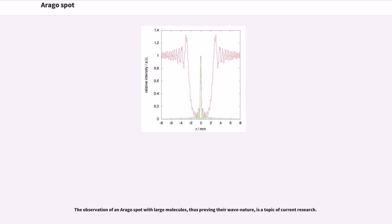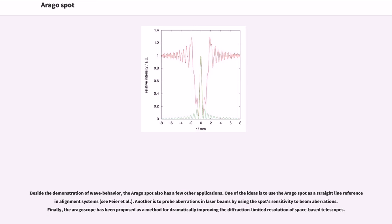The observation of an Arago spot with large molecules, thus proving their wave nature, is a topic of current research. Beside the demonstration of wave behavior, the Arago spot also has a few other applications. One of the ideas is to use the Arago spot as a straight line referencing alignment system. Another is to probe aberrations in laser beams by using the spot's sensitivity to beam aberrations. Finally, the Aragoscope has been proposed as a method for dramatically improving the diffraction-limited resolution of space-based telescopes.